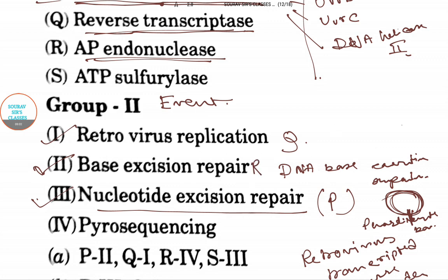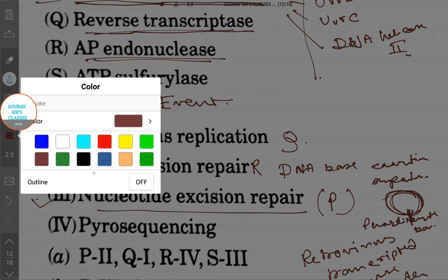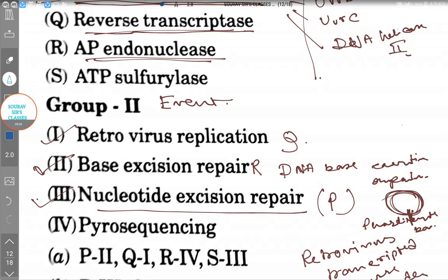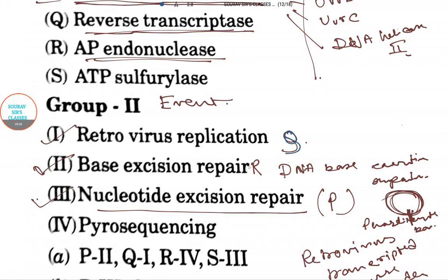It creates a nick in DNA and breaks the phosphodiester bond. So here, clearly base excision repair is done by this AP endonuclease, which is R.